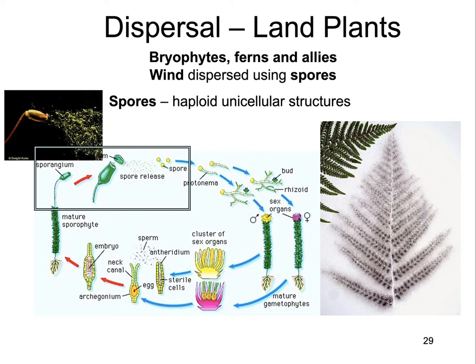Now let's talk about dispersal in land plants. Dispersal is about how a plant moves from one place to another. Bryophytes, ferns, and allies are exclusively wind-dispersed and use something called spores to move from point A to point B. Spores are haploid, unicellular structures that behave similarly to seeds in the sense that they're used for dispersal, but spores are different from seeds. The image here shows moss spores flying through the air, and ferns produce spores in little dots on their undersides.